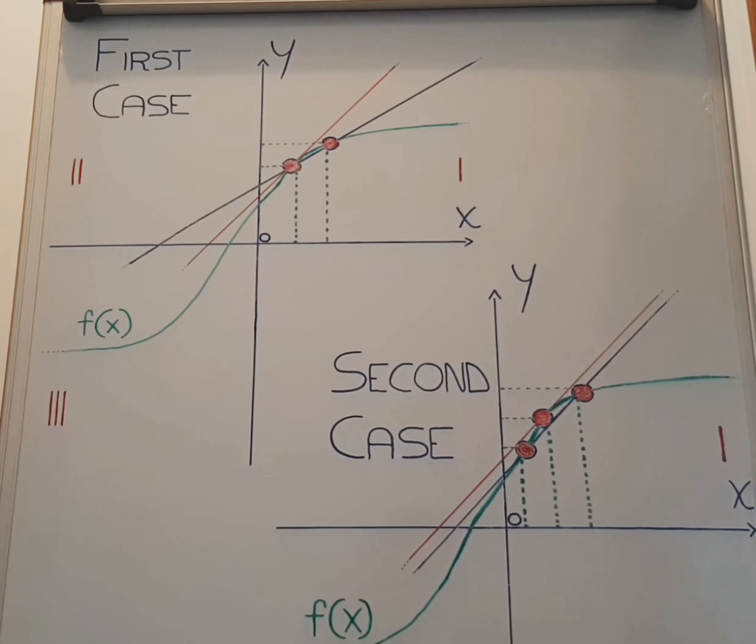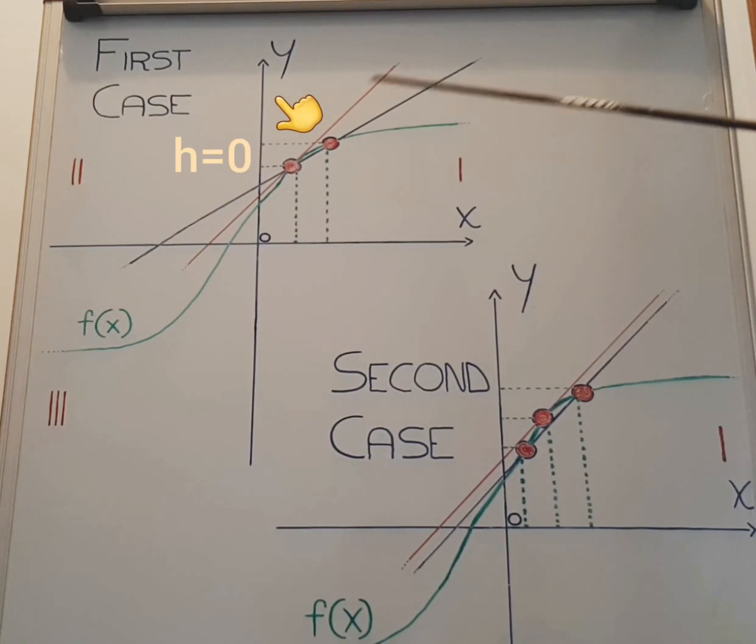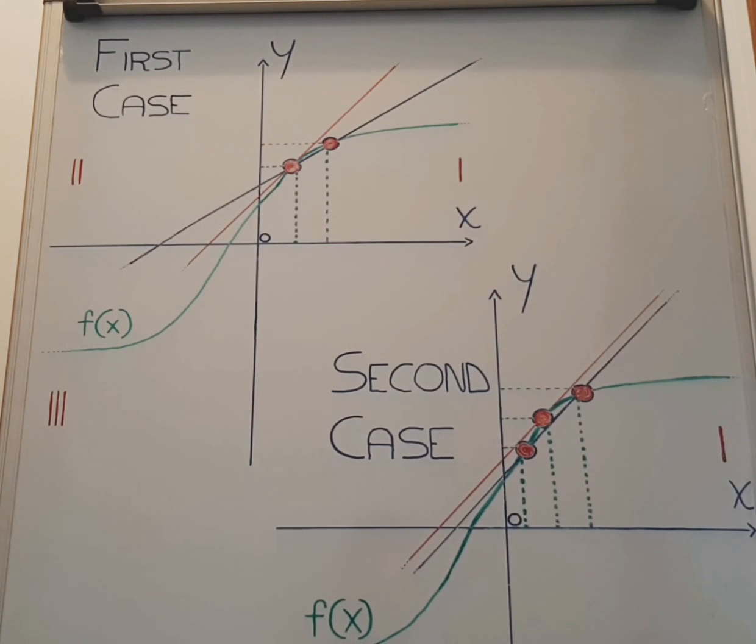If h were equal to 0, the line will separate from the function moving externally. Now let us assume that along the abscissa axis, instead of constructing towards segment x, we construct a segment h starting from point x0 and we set a circular neighborhood of point x0 with a dimension of 2h.